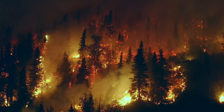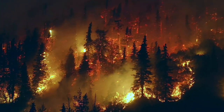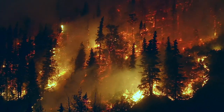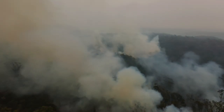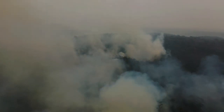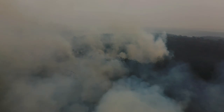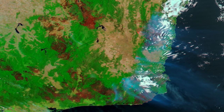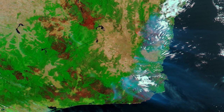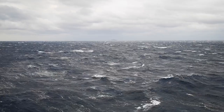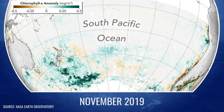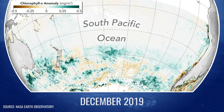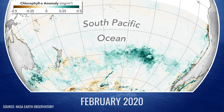Between September 2019 and March 2020, wildfires killed billions of animals and decimated more than 200,000 square kilometers of Australian forest, an area larger than the size of Nebraska. Some thousands of kilometers away in the Southern Ocean, massive algae blooms covered a surface larger than the area of Australia itself.